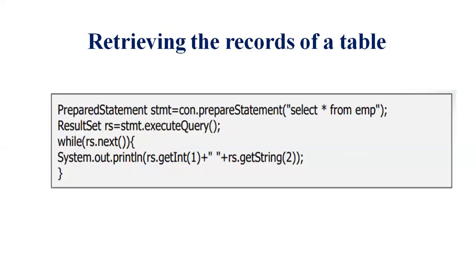Retrieving a record: PreparedStatement stmt = con.prepareStatement with the SQL: select * from emp to get all table records. ResultSet rs = stmt.executeQuery() executes the query. Using while(rs.next()), we iterate through results and print each row with System.out.println(rs.getInt(1) + " " + rs.getString(2)), getting the first and second columns respectively.